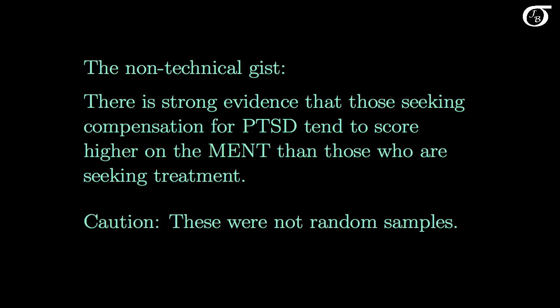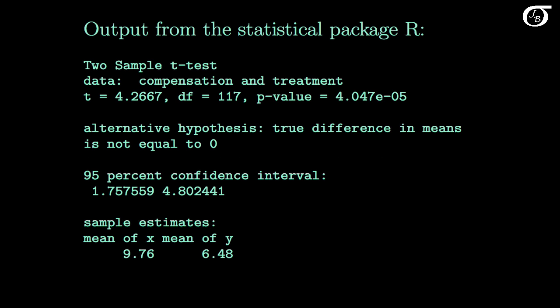We need to exercise some caution in our conclusions. These samples were taken in Croatia, so our conclusions really only apply to those claiming PTSD there. Also, they were not truly simple random samples — these were people seeking medical treatment at a clinic who agreed to participate, so we never know what biases may have been introduced by this sampling design. In practice we almost always carry out calculations using computer software. Our job is to choose the appropriate method, make sure the assumptions are reasonable, and make appropriate conclusions. Here's the output from R, and we can see the t statistic, p-value, and confidence interval match what we calculated, given to more decimal places.